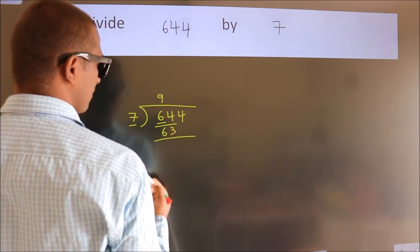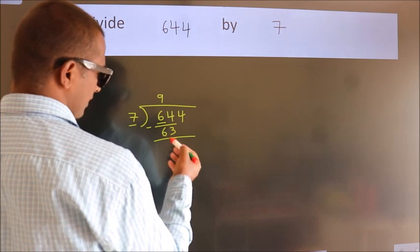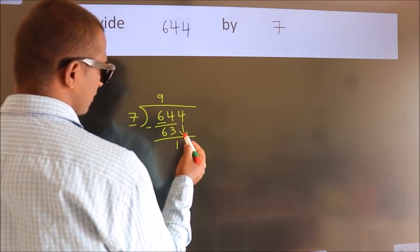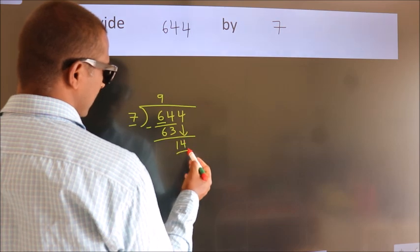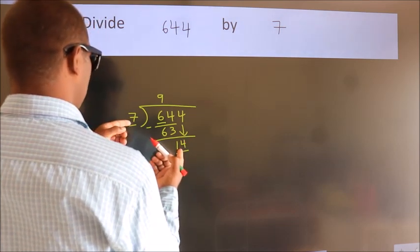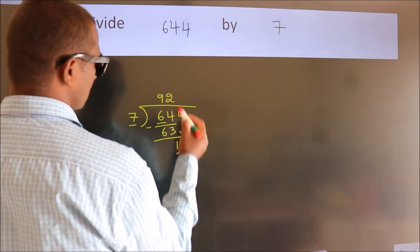Now, we should subtract. We get 1. After this, bring down the beside number. So 4 down. So 14. When do we get 14? In 7 table. 7 twos, 14.